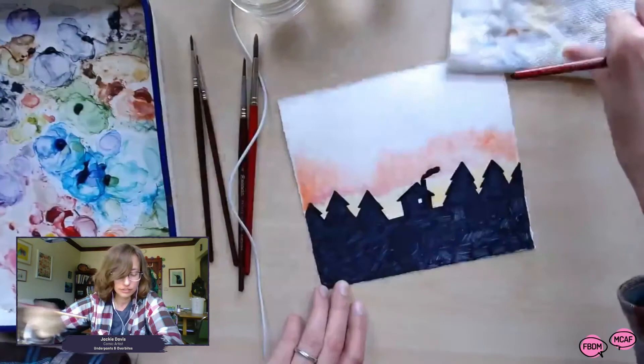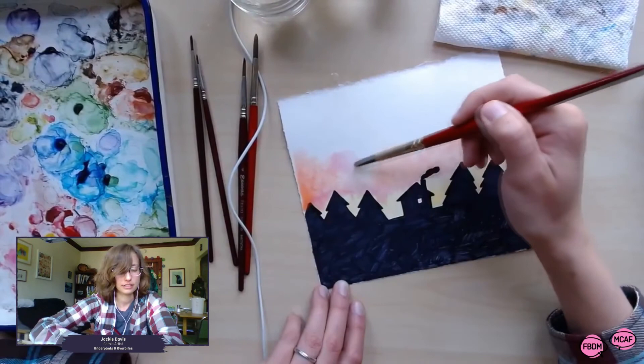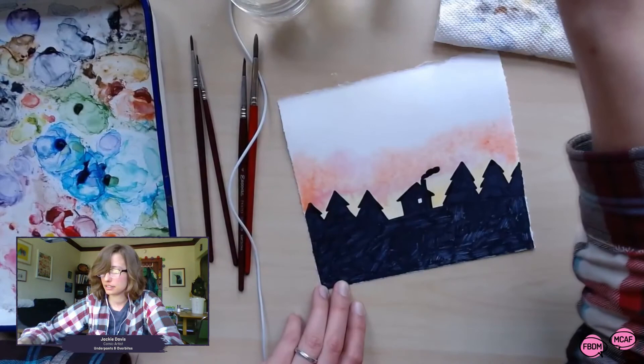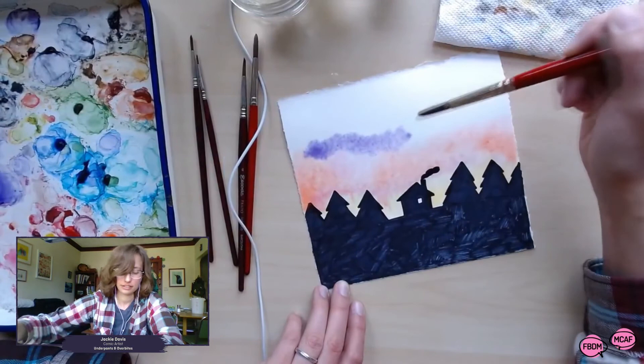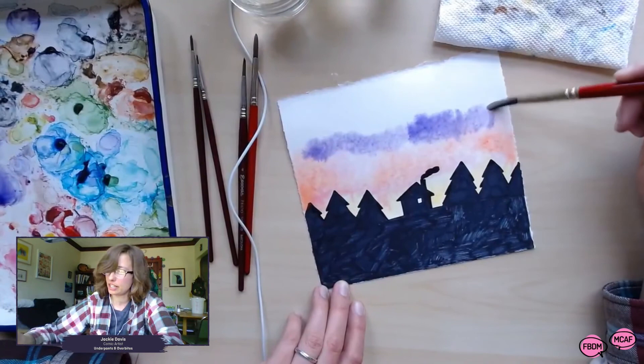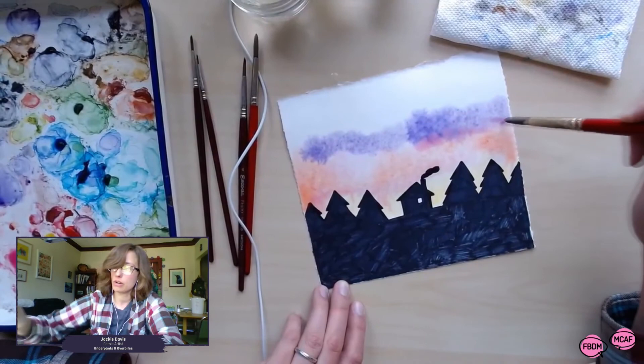And then as it gets darker I'm gonna add a little pink above it too so that we can transition into a purple. So there's no exact formula on how to paint a sunset, I just kind of play with what I think is working. I thought the purple to the orange was a little too big of a jump so I wanted to smooth it out a little bit.